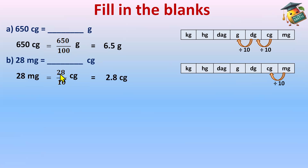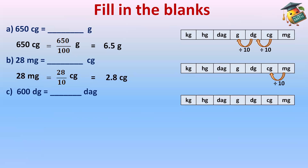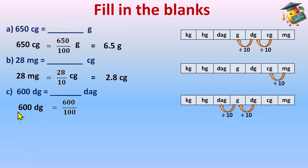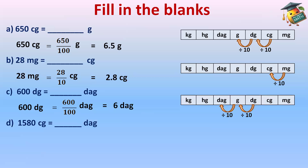Part C: convert 600 decigram to decagram. Make the chart. Decigram to gram, then gram to decagram — moving backward, 2 steps, divide by 100. So 600 decigram equals 600 divided by 100, which is 6 decagrams. You can either cancel the zeros or place the decimal to get the answer of 6 decagrams.